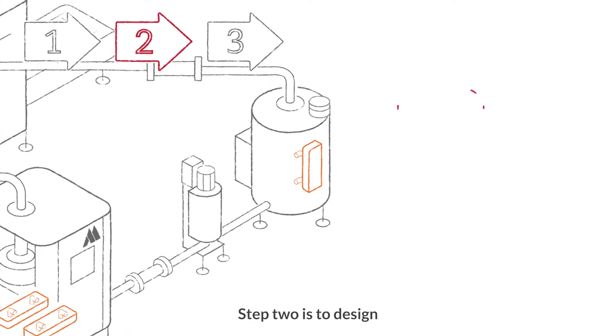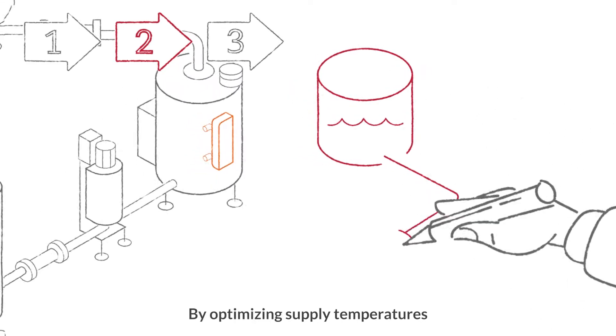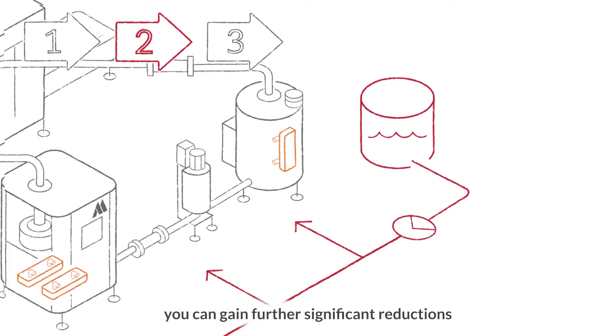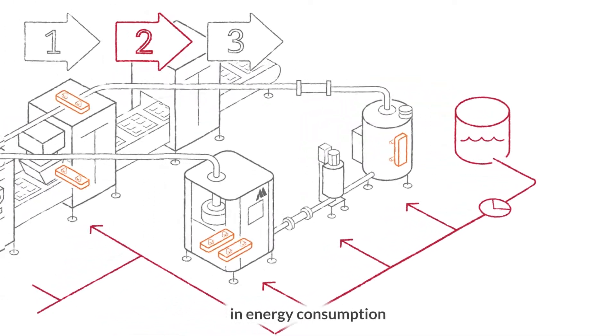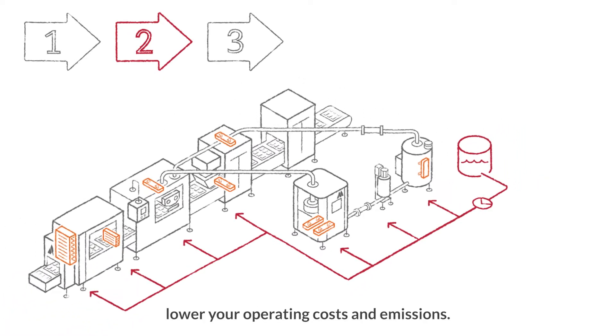Step two is to design the system that will connect and supply your equipment. By optimizing supply temperatures relative to specific operating conditions, you can gain further significant reductions in energy consumption that will, in turn, lower your operating costs and emissions.